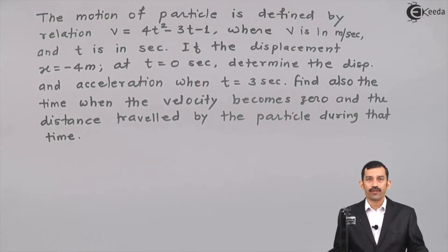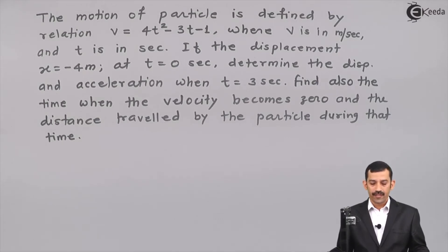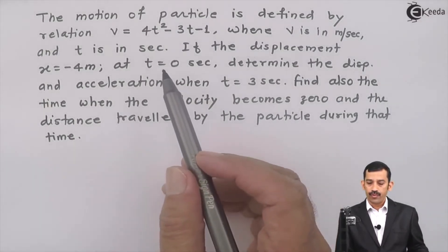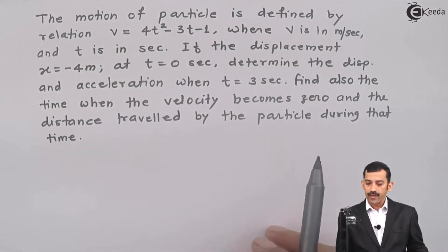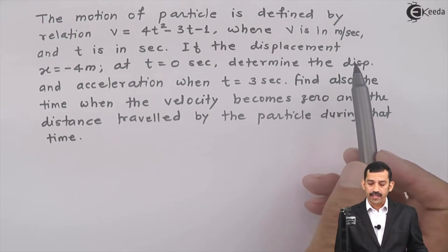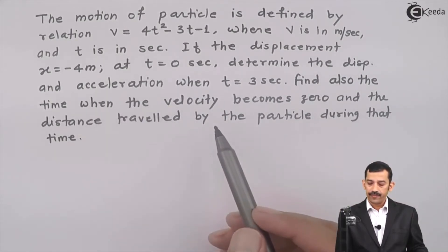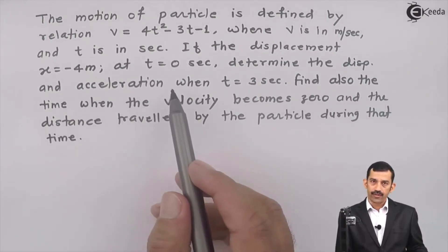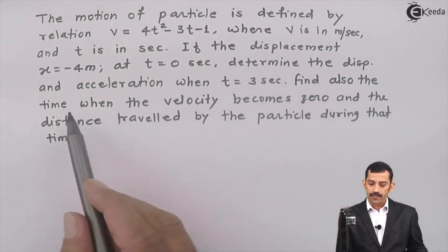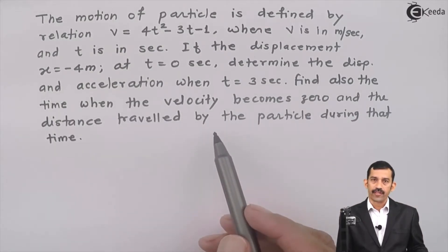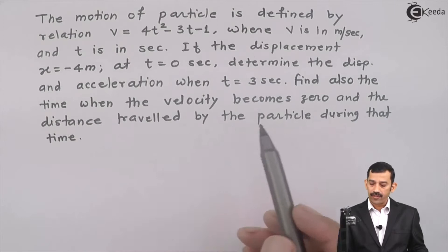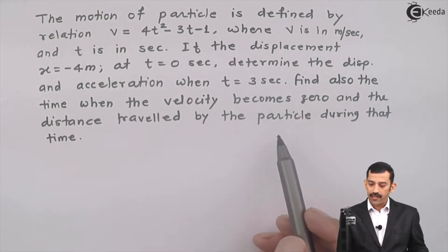Hi friends, we will solve a problem on variable acceleration. The motion of a particle is defined by the relation v equal to 4t squared minus 3t minus 1, where v is in meters per second and t is in seconds. If the displacement x equals minus 4 meters at t equal to 0 seconds, determine the displacement and acceleration when t equals 3 seconds. Find also the time when velocity becomes 0 and the distance traveled by the particle during that time.